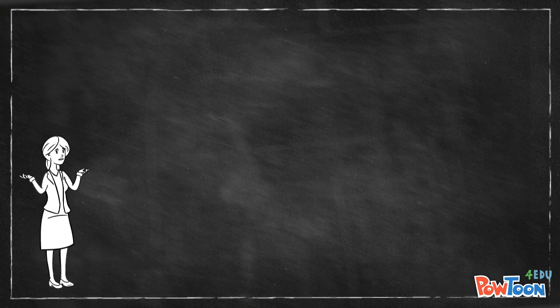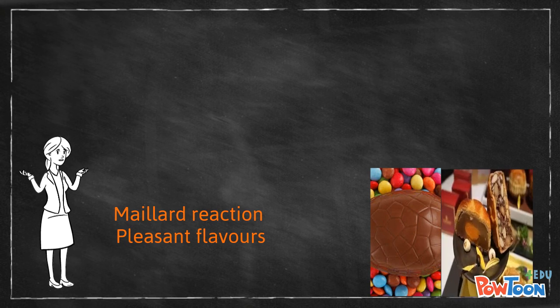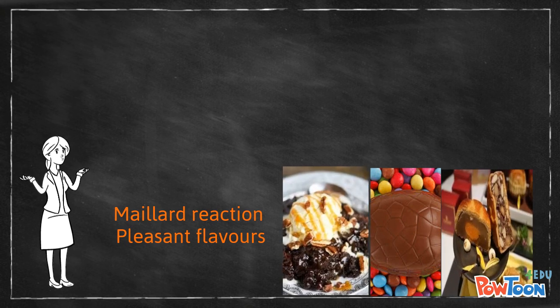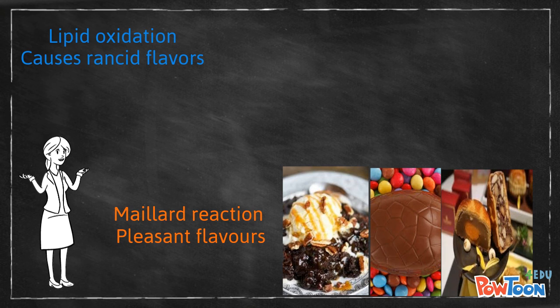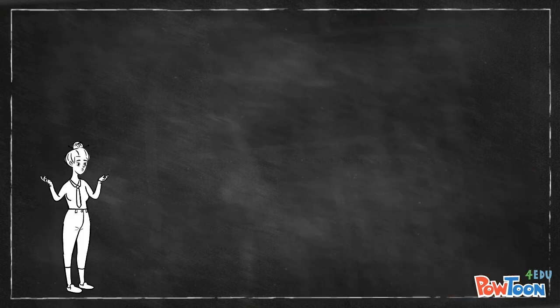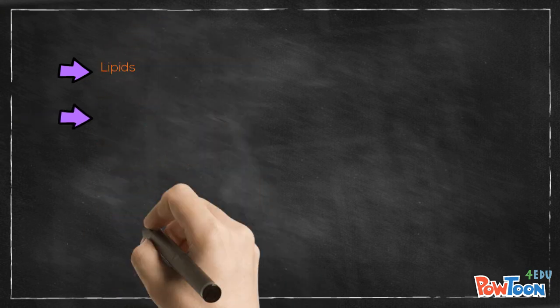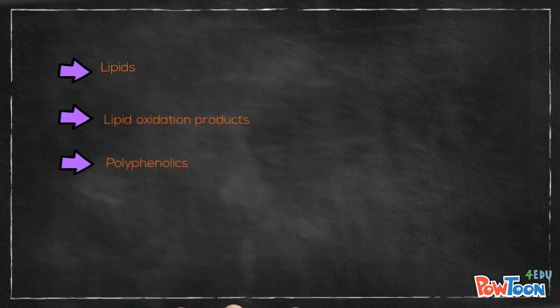The Strecker degradation of amino acids has emerged as a seemingly endless source of flavor-significant compounds since its discovery almost 150 years ago. Maillard reaction is related to pleasant flavors, while lipid oxidation is responsible for rancid flavors during storage. The question is whether Strecker products can be formed due to other pathways as well. Today, Strecker and Strecker-like reactions encompass a much wider range of food components including lipids, lipid oxidation products, polyphenolics, and terpenoids.